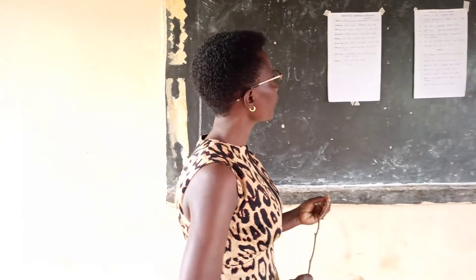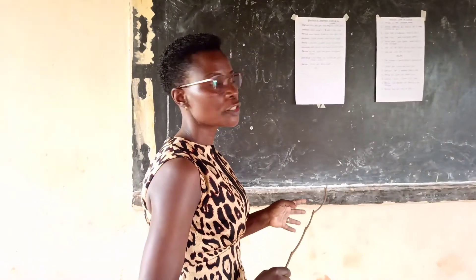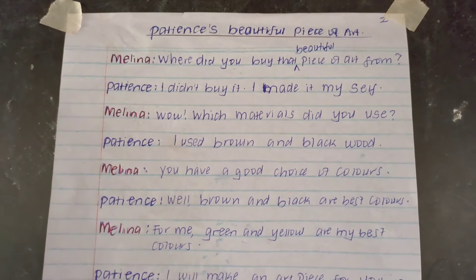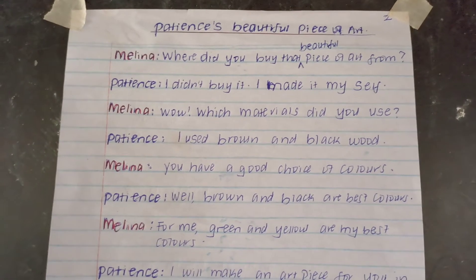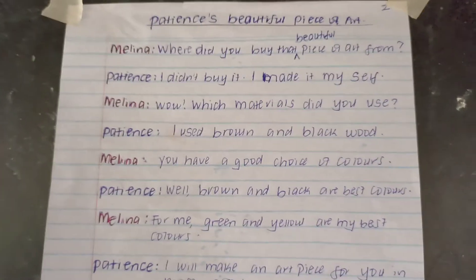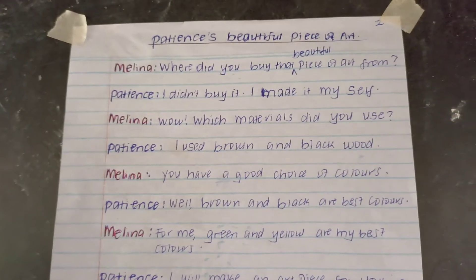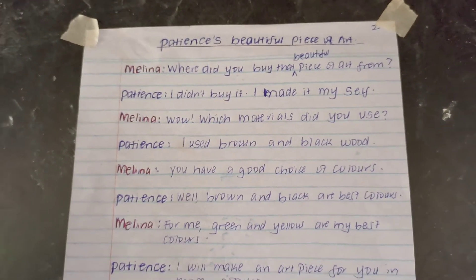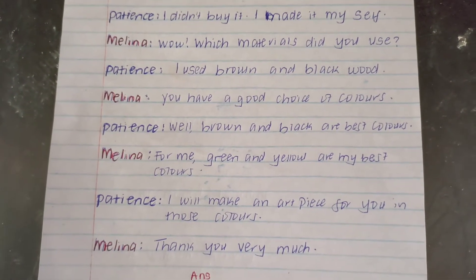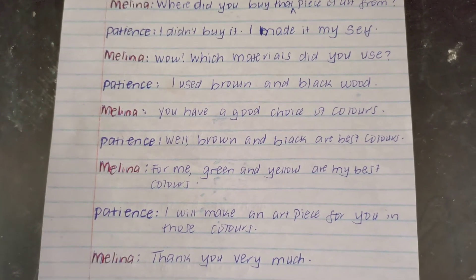We have a dialogue here. We are going to read through, then after, we answer the questions about it. The title of the dialogue is Patience's Beautiful Piece of Art. Melina: Where did you buy that beautiful piece of art, Patience? Patience: I didn't buy it, I made it myself. Melina: Wow! Which materials did you use? Patience: I used brown and black wood. Melina: You have a good choice of colors. Patience: Well, brown and black are my best colors.